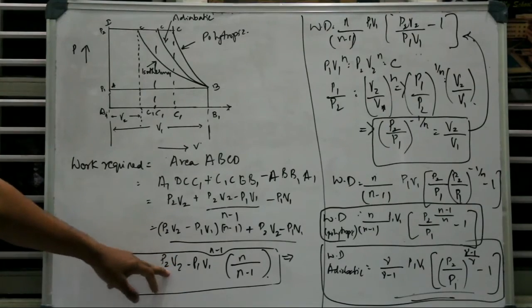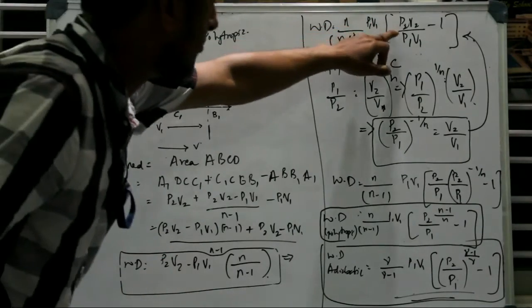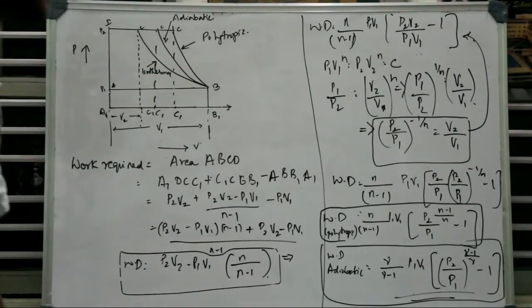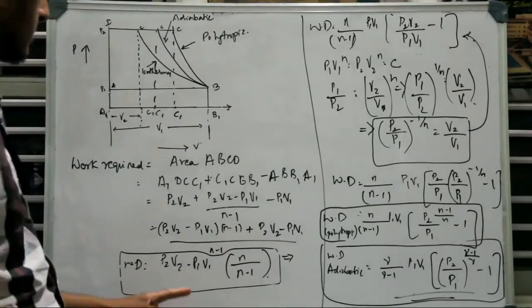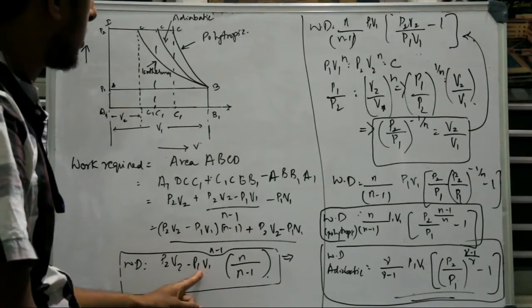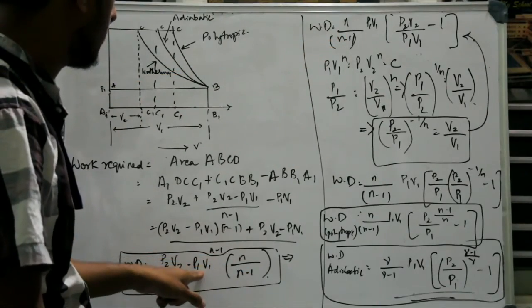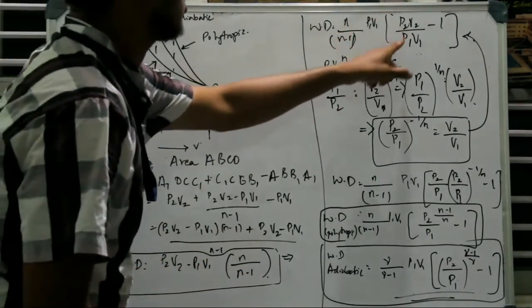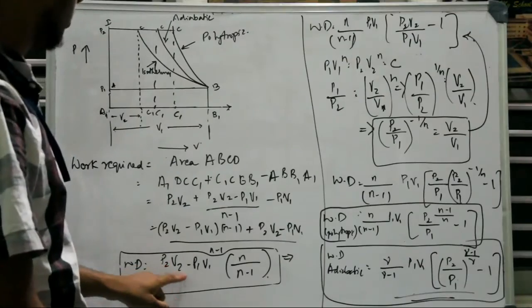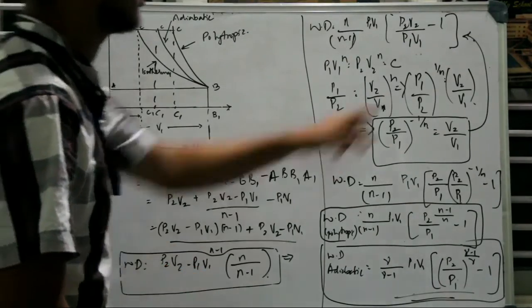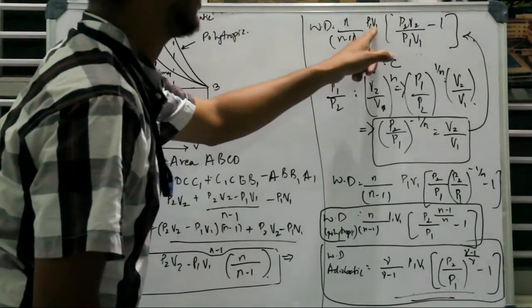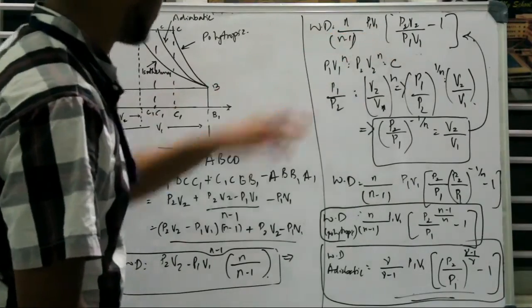From here we substitute. We first take the common factor from this expression. We take the common factor of P1 V1, so that becomes N over N minus 1 into P1 V1 multiplied by P2 V2 divided by P1 V1 minus 1. So we get that expression here when we take P1 V1 common from this expression.